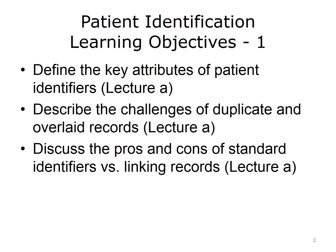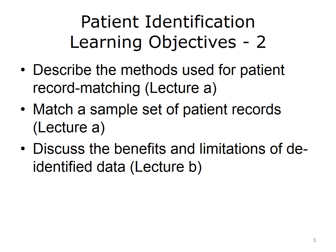The learning objectives for this unit, Patient Identification, are: define the key attributes of patient identifiers; describe the challenges of duplicate and overlaid records; discuss the pros and cons of standard identifiers versus linking records; describe the methods used for patient record matching; match a sample set of patient records; and discuss the benefits and limitations of de-identified data.